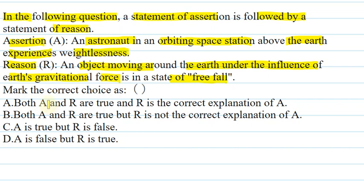We need to identify which of the four options is correct: Both assertion and reason are true and reason is the correct explanation of assertion; or both assertion and reason are true but reason is not the correct explanation; or assertion is true but reason is false; or assertion is false but reason is true.